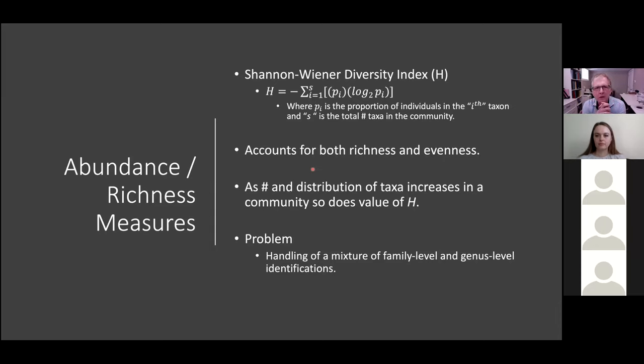The next thing - there are two indices, abundance and richness measure indices, that are typically used. Shannon-Wiener is generally preferred. There's this horrible long formula, but it accounts for both richness and evenness. The total number of taxa and how evenly are they in equal proportions. It factors both of those into coming up with a metric.